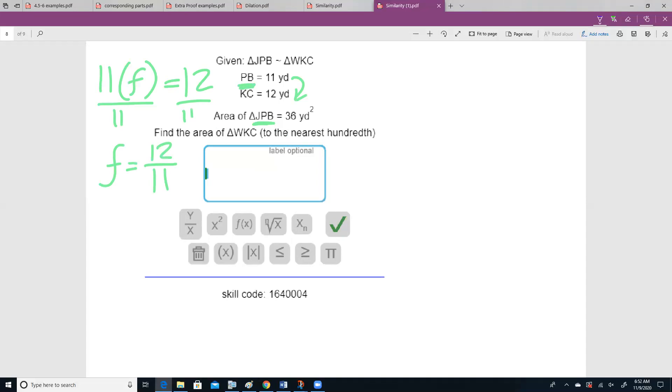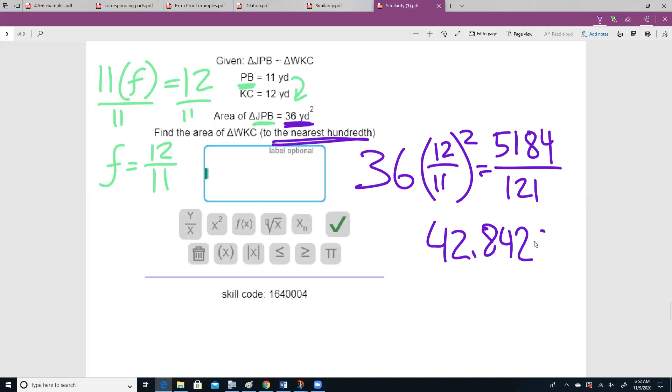I need to use that scale factor squared, multiply it by 36, because that's our known area. We've got our unknown area. 12 over 11 squared. If I clicked in my calculator, I got 5,184 over 121. And while that is the right answer, we want this rounded to the nearest hundredths. So I actually need to do that division. 5,184 divided by 121. And that's going to give me 42.8429.